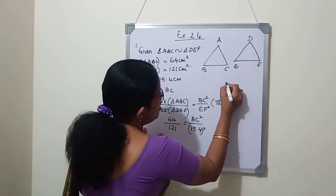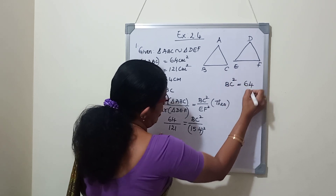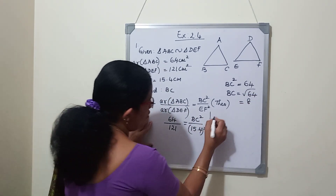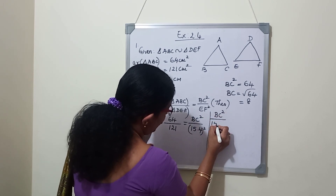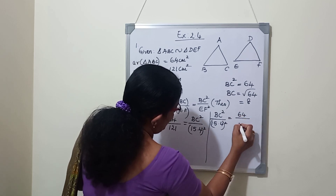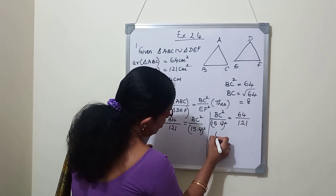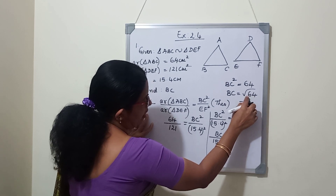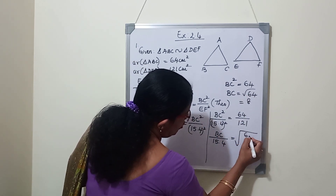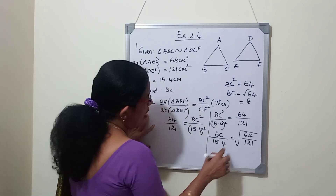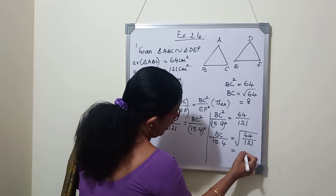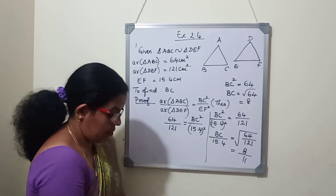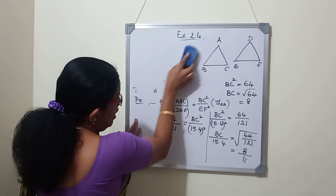We want to find BC. BC square by 15.4 whole square equals 64 by 121. Now we write BC by 15.4. Taking square root on both sides: square root of 64 is 8 and square root of 121 is 11. So BC by 15.4 equals 8 by 11.